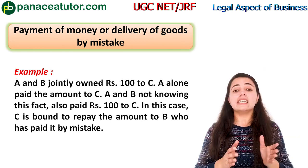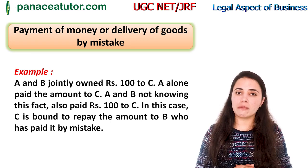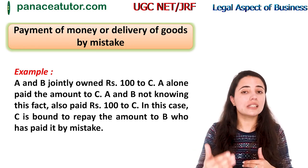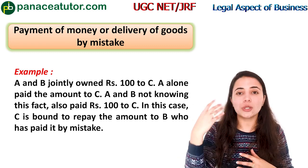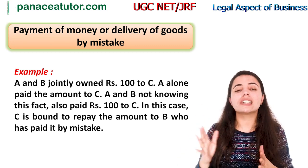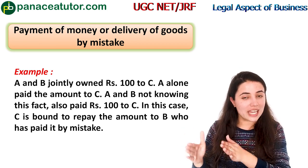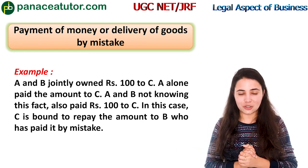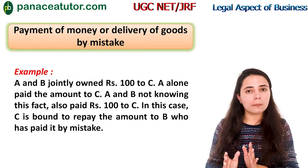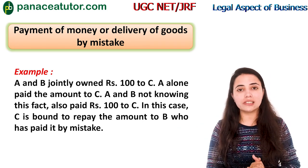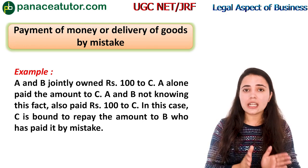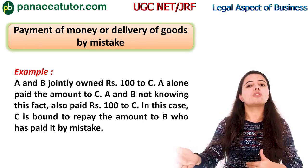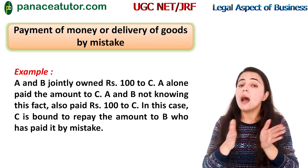The next point is payment of money or delivery of goods by mistake. For example, A and B jointly owed Rs. 100. A gave C Rs. 100. B did not know that A had already paid, so B also gave C Rs. 100. Now C has received Rs. 200, but A and B were jointly owed only Rs. 100.